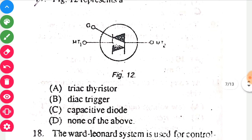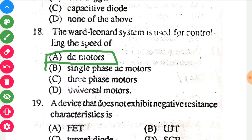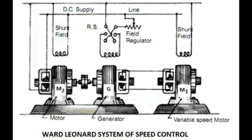Figure 12 represents a triac thyristor — it is quite obvious. The 18th question: the Ward Leonard system is used for controlling the speed of DC motors. The Ward Leonard system, also known as Ward Leonard drive, was a widely used DC motor control system introduced by Harry Ward Leonard in 1891.